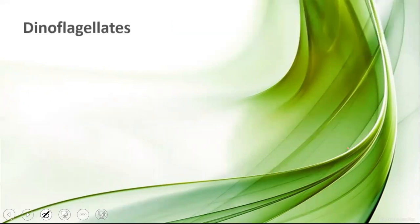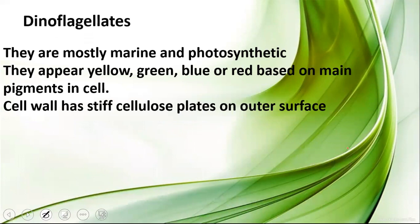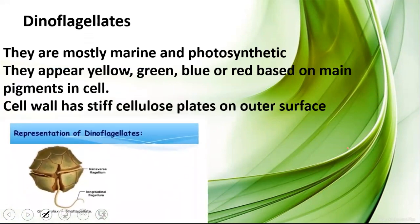Dinoflagellates are mostly marine and photosynthetic. They appear in different colors — yellow, green, blue, or red — based on their main pigments. They consist of stiff cellulose plates on their outer surface, acting like a cuticle. As their name implies — 'dino' meaning two, 'flagellates' meaning bearing flagella — they bear two flagella: one transverse and one longitudinal.